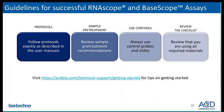Some general tips to ensure success with RNAscope and BaseScope assays: first, follow the protocol. We have various complete protocols with details to help address the best way to run the assay. Sample pretreatment is very important to ensure optimal RNAscope signal; conditions will differ from sample type to sample type and may require optimization. Using controls is highly recommended, especially when troubleshooting. It is also critical to make sure you have all components required before you begin the assay.